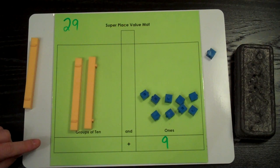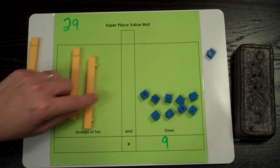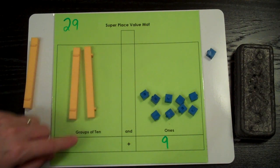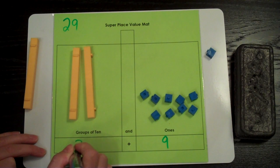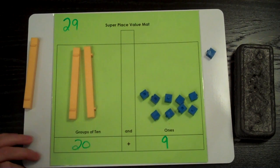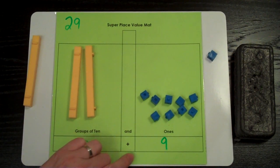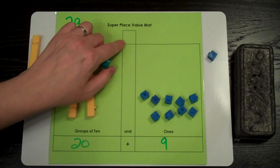Next is the tens. Let's count by ten to see what number we made. Ten, twenty. We write twenty here. Twenty plus nine equals twenty-nine.